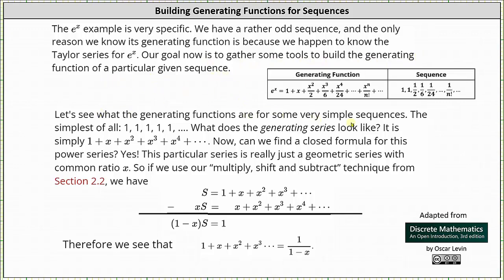Let's see what the generating functions are for some very simple sequences. The simplest of all would be a sequence of 1s. The generating series is simply 1 plus x plus x squared plus x cubed and so on. Notice all the coefficients are 1. The question is can we find a closed formula for this power series? This series is really just a geometric series with the common ratio x — as we progress through the terms, we multiply the previous term by x to get the next term.